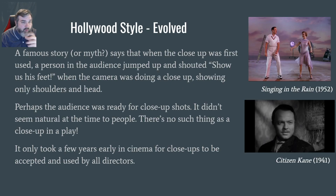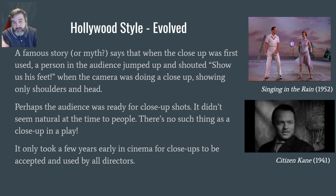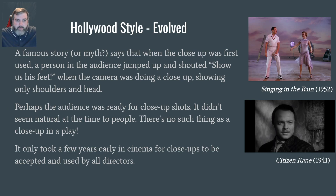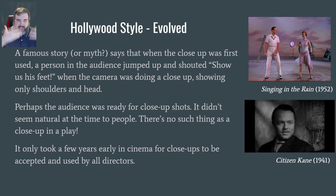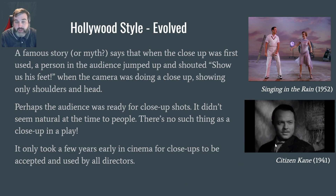A famous story — perhaps anecdotal — says that the first time a close-up was used in the movies, a person in the audience jumped up and said 'show us his feet,' because the close-up would show maybe just the chest, kind of what you're seeing of me right now on this film. In Citizen Kane, for example, this is a close-up. Mostly before that, especially in musicals, you'd see the feet as well, because they're dancing and you want to see what they're doing.